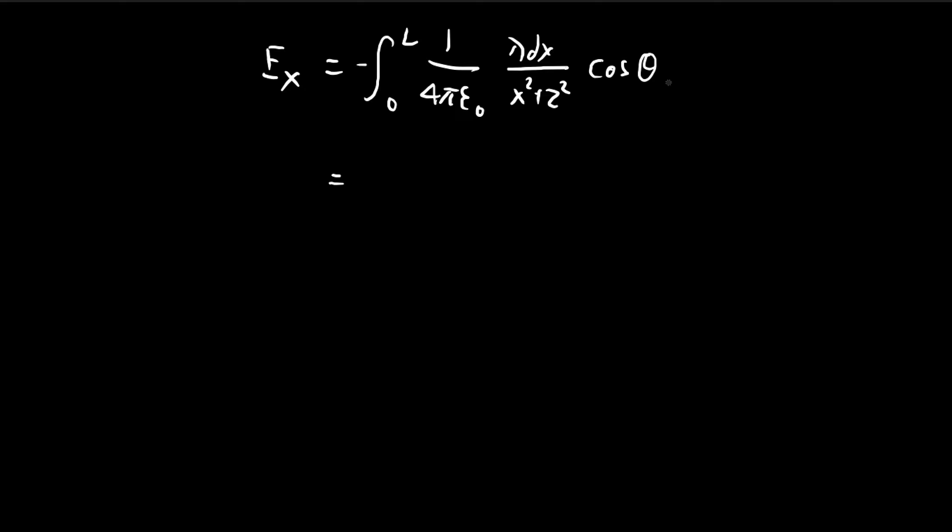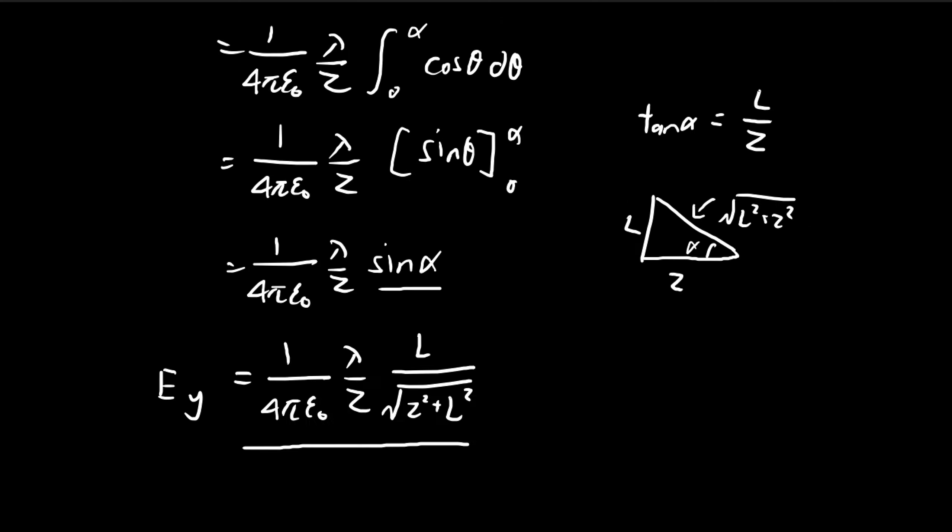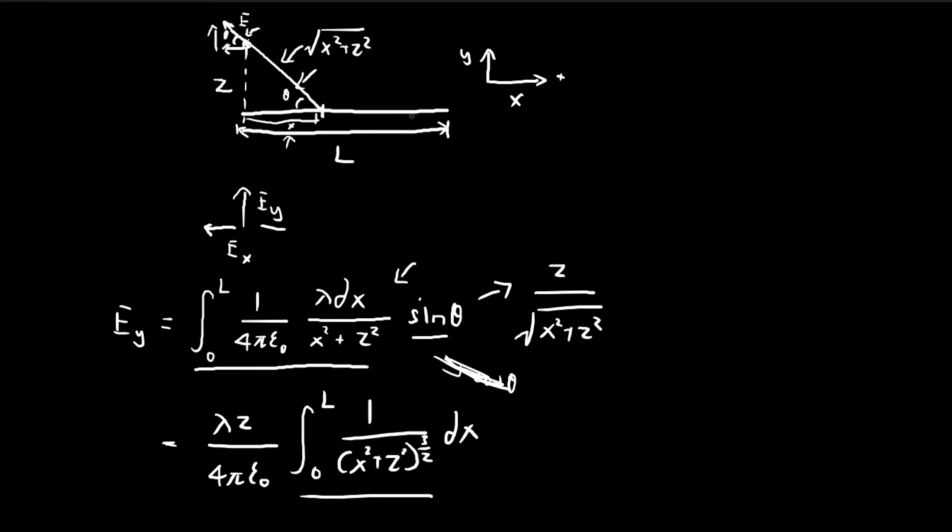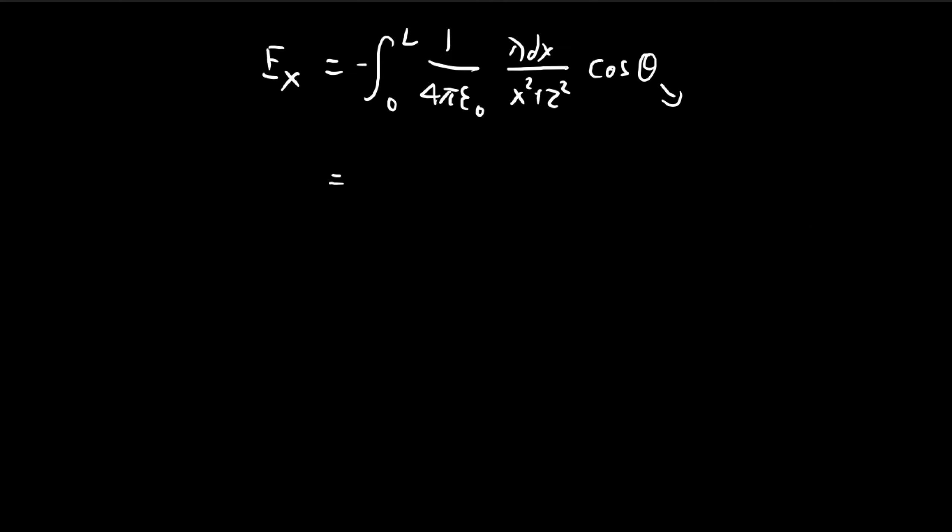So all we have to do now is to evaluate this expression. And using the same method as before, cosine of theta is going to be equal to x divided by the square root of x-squared plus z-squared. So this is going to be x divided by x-squared plus z-squared. So we're going to be left with this integral right here.